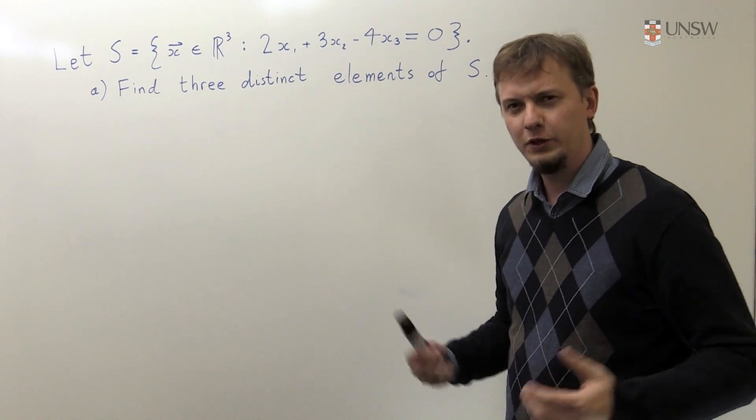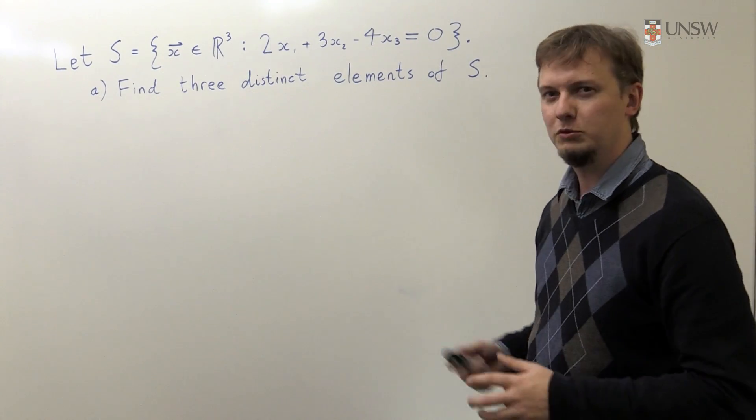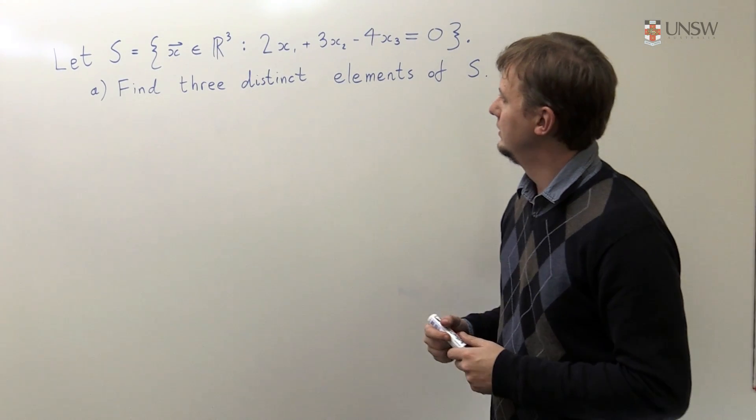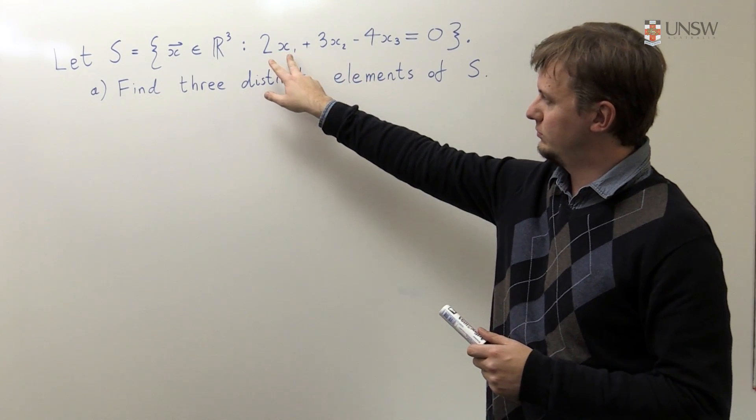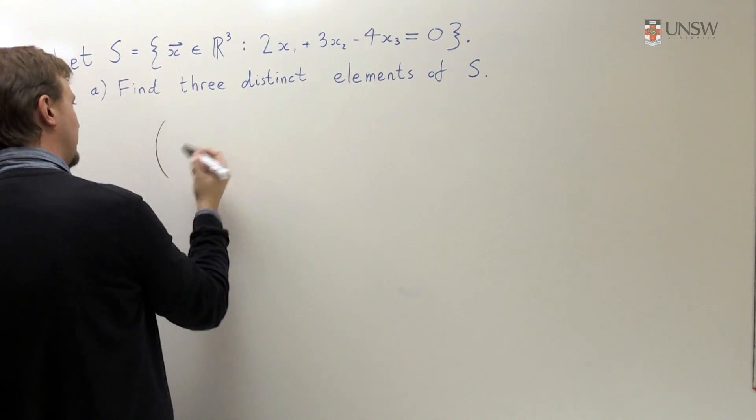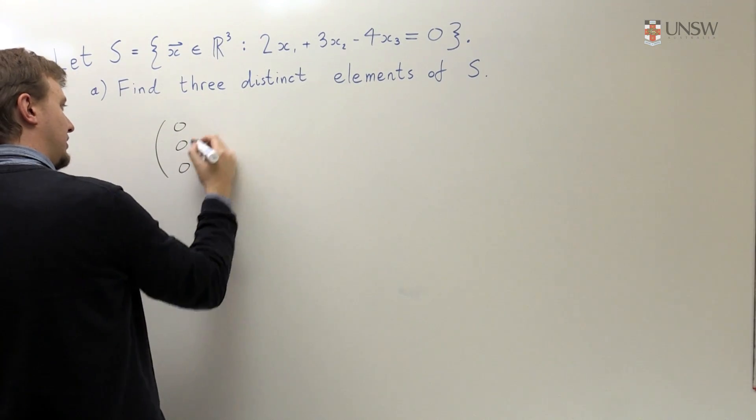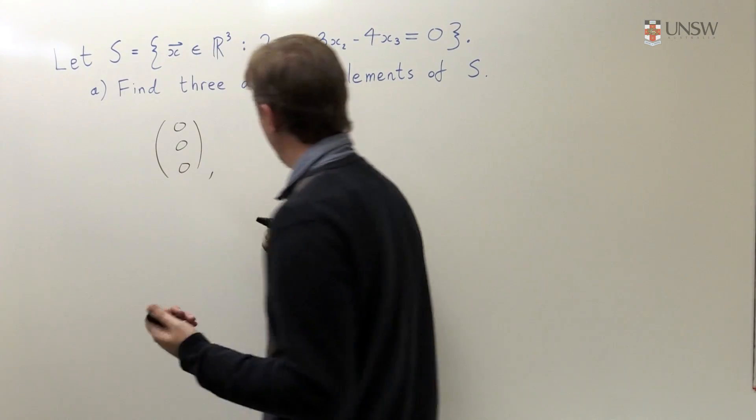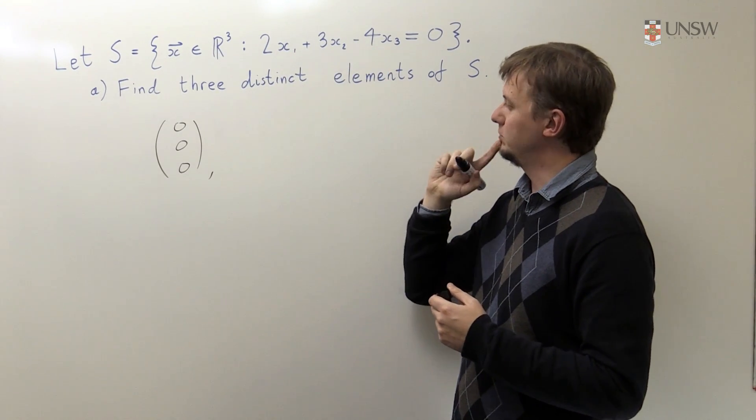So how are we going to find three distinct elements of S? Well let's just take a look at this equation and see what solutions we can come up with. Now looking at this, a fairly obvious solution is to just take all three components equal to zero. So I'm going to take my first example element to be the vector (0, 0, 0). So 2 times 0 plus 3 times 0 minus 4 times 0 is zero.